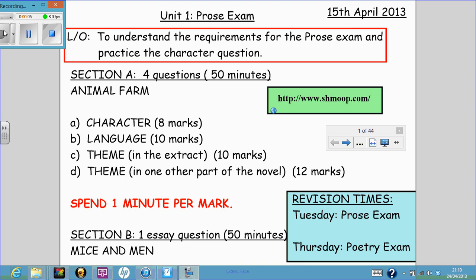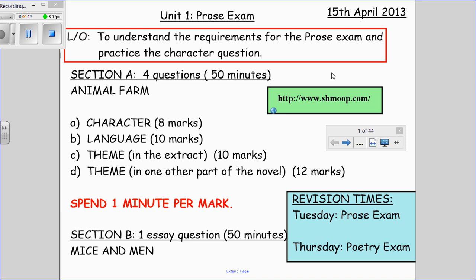The Unit 1 Prose Exam is on the 20th of May this year and consists of two sections. Section A focuses on Animal Farm with four questions: character for 8 marks, language for 10 marks, theme based on the extract for 10 marks, and theme in one other part of the novel worth 12 marks. It will take you 50 minutes to work through that section, and you should be working on one mark per minute.